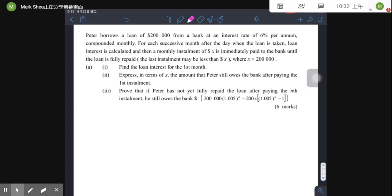$200,000 from a bank and the interest rate is 6% per annum and it is compounded monthly. Okay, this is very important for you to calculate the interest, the compound interest, and also the period. Those are very important.